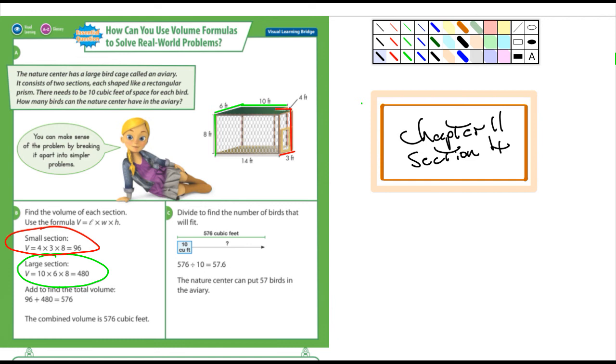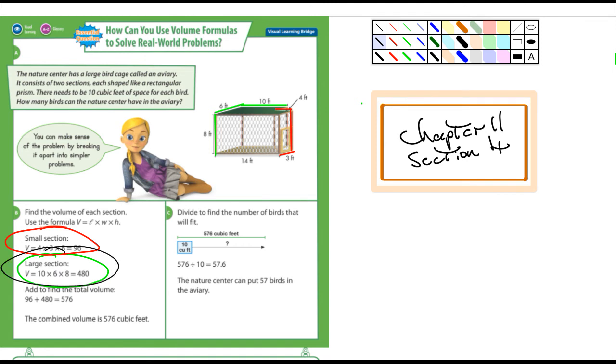Well, to figure that out, the first thing you need to do is figure out how much space they have. They've got the dimensions right here, and you can see I kind of highlighted them in green and red. If you look carefully down here in section B, the large section is in green here, and it's 10 by 6 by 8. So you can see there's a 10-foot length right here, and then a 6-foot, and then an 8-foot length.